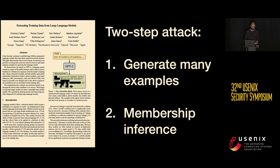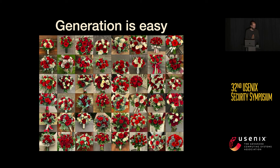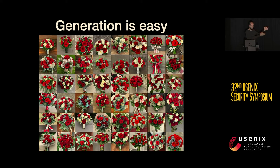How does this actually work? We use the diffusion model in the completely intended way to generate a bunch of images. You just pick random prompts, ask the model for a couple hundred images of that prompt, and you get a nice diverse grid of images. Now what we need to do is find some way to separate the memorized images from the novel generations.